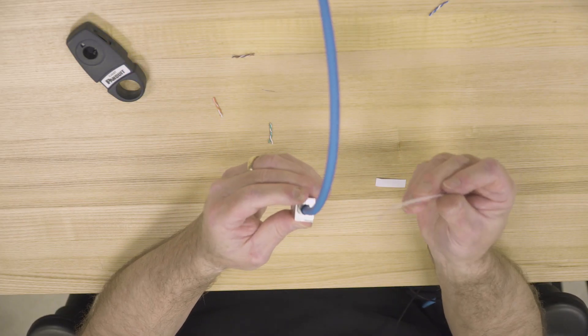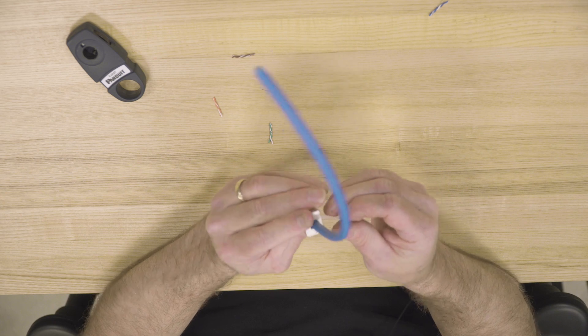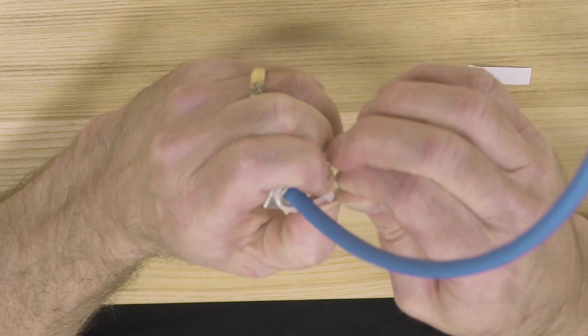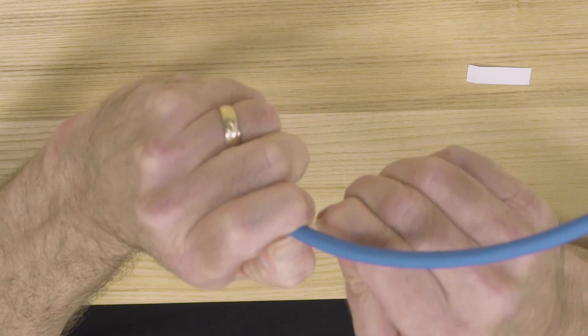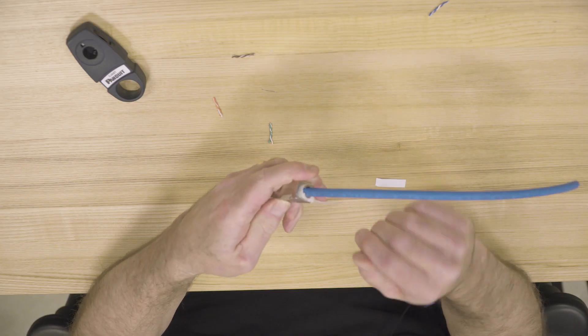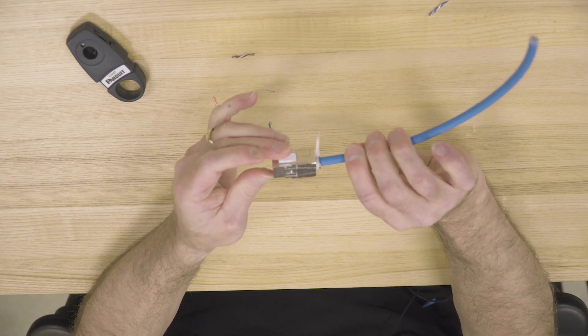Lastly, as an insurance policy, take the cable tie and pull it tight around the jack module itself. That'll stop it from opening up.